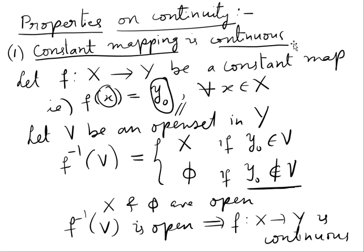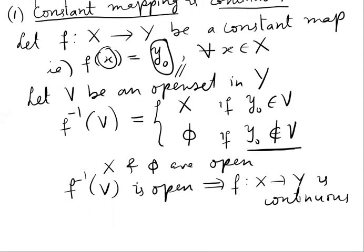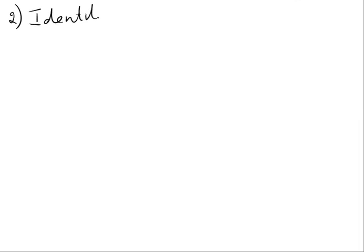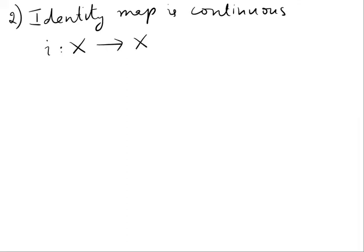The next property we are going to prove is that the identity map is continuous. Second property: identity function or identity mapping is continuous. What is identity mapping? We take one topological space to the same topological space X. The identity map I of x is equal to x for all x belonging to capital X.